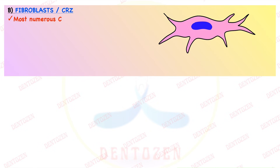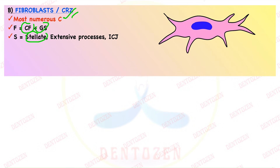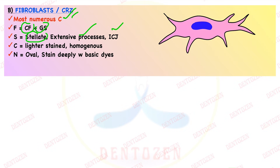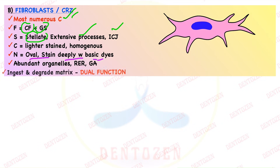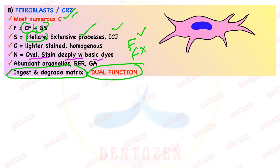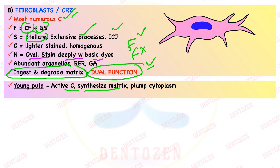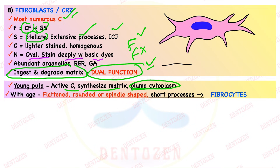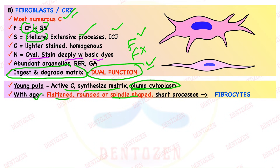The second cell type is fibroblasts. They are present in the cell-rich zone and are the most numerous cells. Their function is collagen fiber formation and production of the ground substance of pulp. They have a stellate shape with extensive processes joined through junctions. The cytoplasm is lightly stained and homogeneous, with a large oval deeply stained nucleus and many organelles as they are synthetic cells. They have a dual function — they can both produce and ingest and degrade matrix. In young pulp they are active with plump cytoplasm; in aging pulp they become flattened, rounded or spindle-shaped with short processes and fewer processes — then they are termed fibrocytes.